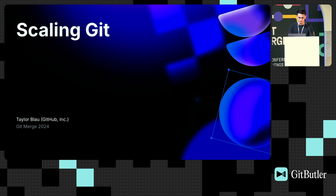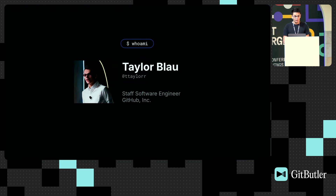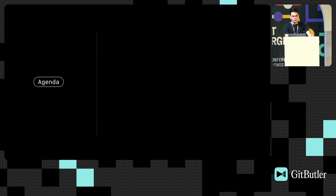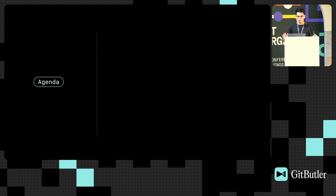Scaling Git. As Scott mentioned, my name's Taylor. I'm a staff software engineer at GitHub. This is my primary focus. I care more than I'm willing to admit about repository performance, its ability to grow, and to take on the newest and most complex repos that we can't even really fathom today. So, an agenda of what we're going to go over — there's a lot of content here and we don't have a ton of time, so this is going to be a whirlwind tour of the last four or five years of my life.